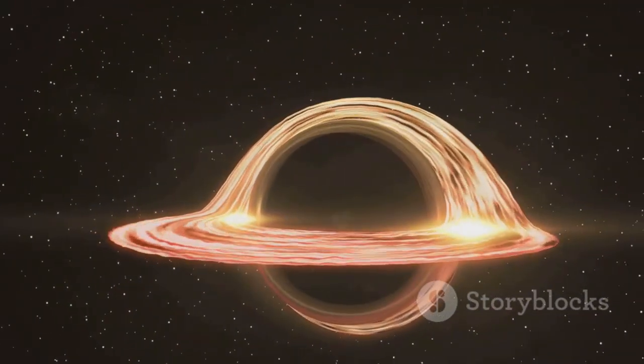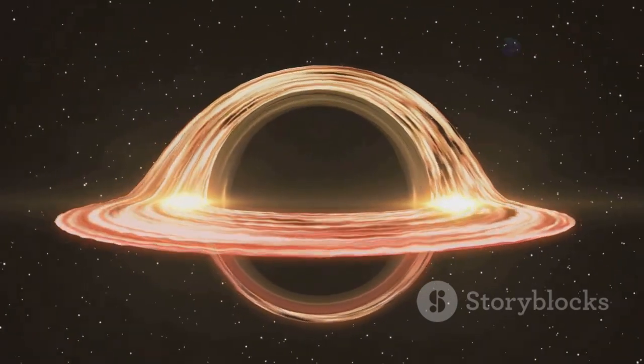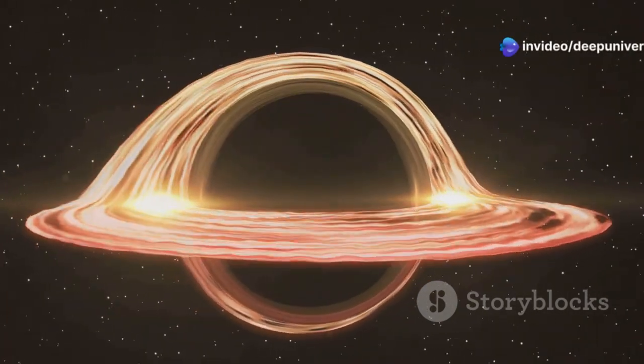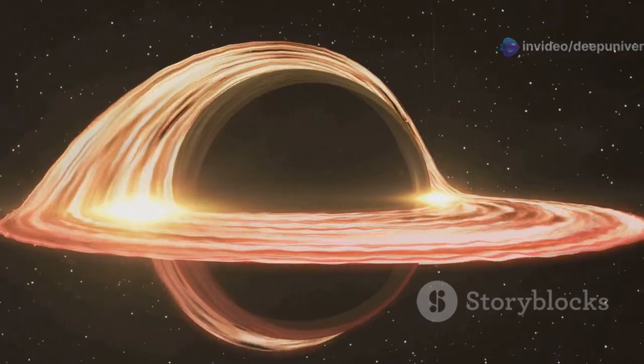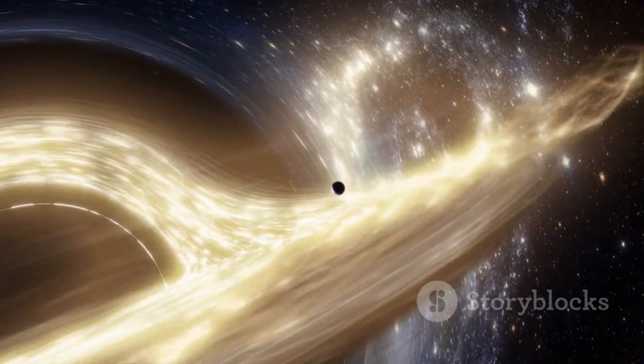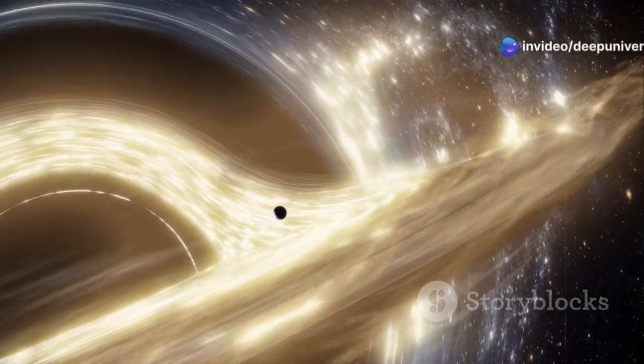As the asteroid falls closer, the pull of gravity intensifies, stretching it like cosmic taffy in a process known as spaghettification. This dramatic elongation is due to the immense difference in gravitational pull between the asteroid's near and far sides. This intense stretching isn't just a fun thought experiment, it's a consequence of the extreme gravitational gradient near a black hole.